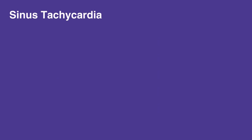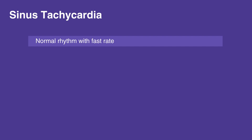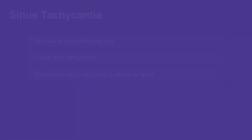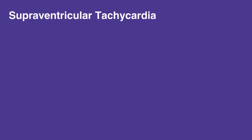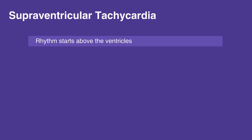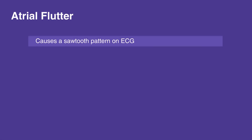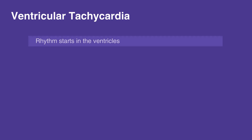Sinus tachycardia: normal rhythm with fast rate, likely non-dangerous and commonly occurs during stress or fever. Supraventricular tachycardia: rhythm starts above the ventricles. Atrial fibrillation: causes irregularly irregular heart rhythm. Atrial flutter: causes a sawtooth pattern on ECG. Ventricular tachycardia: rhythm starts in the ventricles.